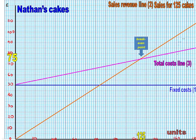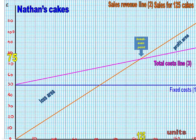Any units above that point would be a profit, so that area above — that little triangle — is called the profit area. And therefore this side below the break-even point is called the loss area.